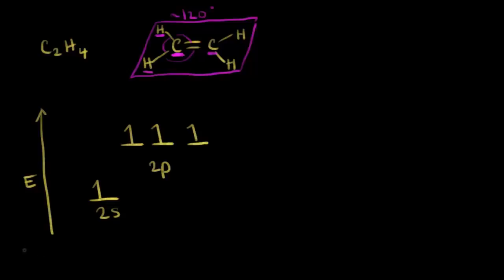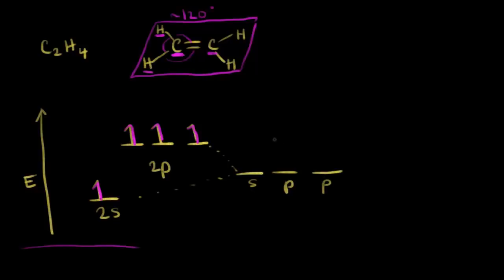We're going to start with our electron configurations in the excited state. Carbon has four valence electrons represented. In the video on sp3 hybridization, we took all four of these orbitals and combined them to make four sp3 hybrid orbitals. In this case, we only have a carbon bonded to three atoms, so we only need three of our orbitals. We're going to promote the s orbital up, and this time we only need two of the p orbitals — one p and then another p — leaving one of our p orbitals unhybridized.